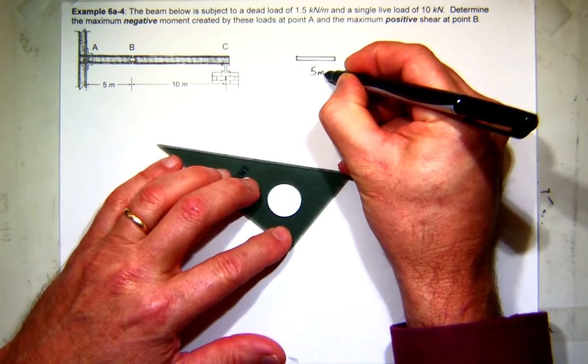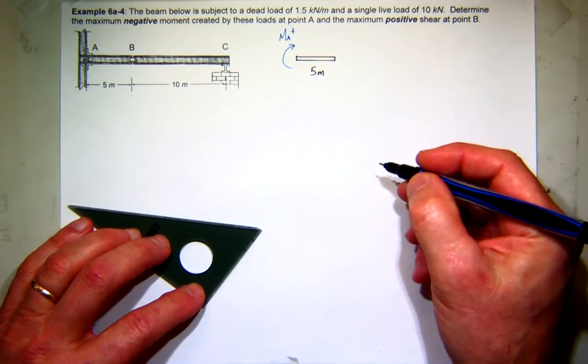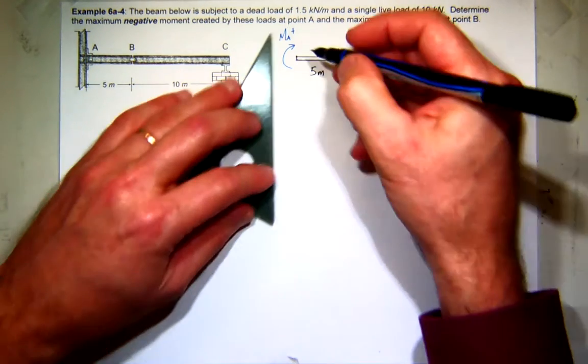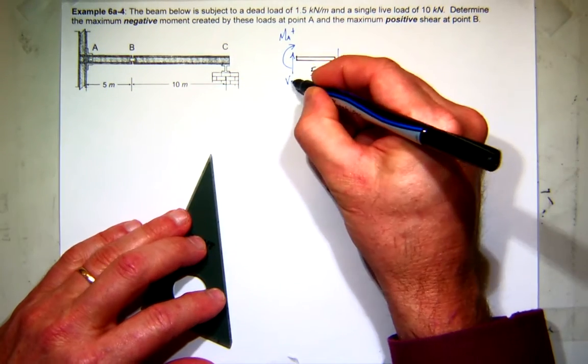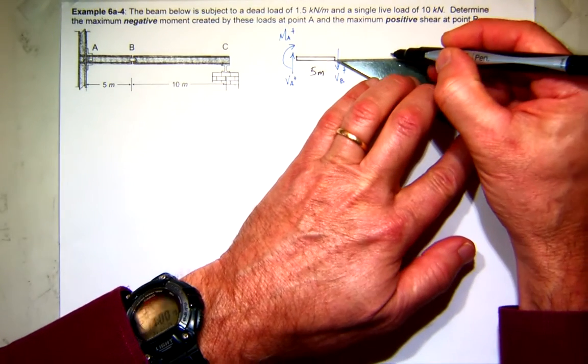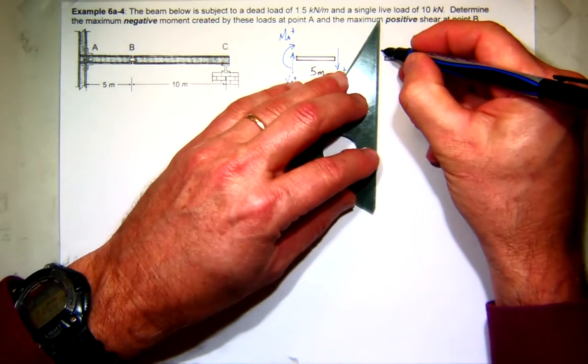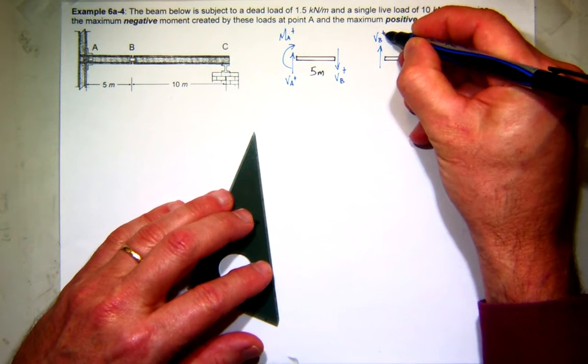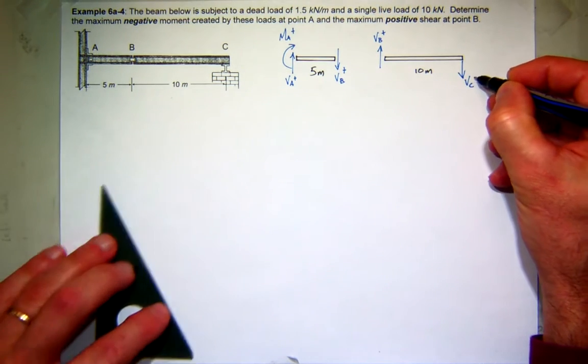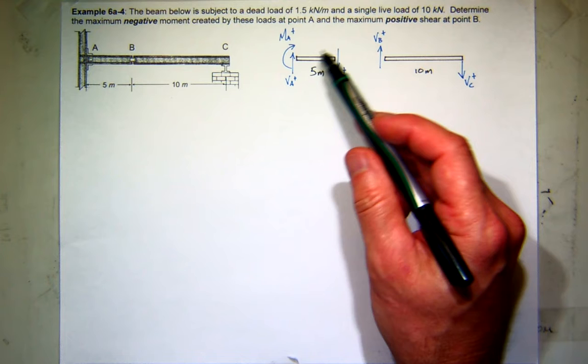There's my five meter segment and on it I'm assuming the moment at A. Then at B, my shear force. Technically I would have another shear force at A. From B to C, that free body is 10 meters, then I'll have the positive shear at B here and the positive shear at C. You can see all I need to do is figure out what's going on here and I can solve for the moment at B.